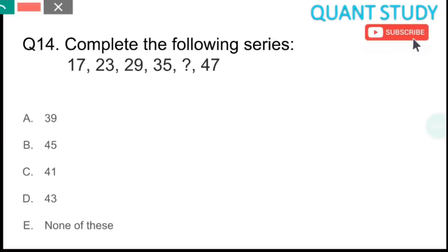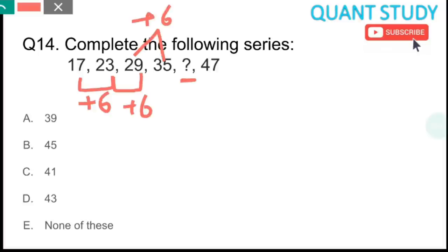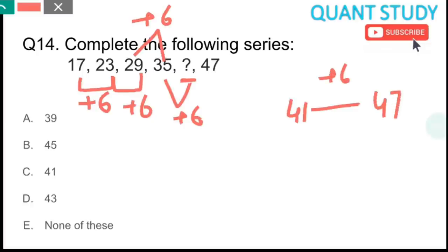Question 14 has a missing element in the middle of a series. One approach is to write the differences between consecutive numbers. The series goes 17, 23, 29, _, 41, 47. The difference between each pair is 6. So: 17+6=23, 23+6=29, 29+6=35, 35+6=41, 41+6=47. The missing number is 35. The answer is option C, 41 — wait, the missing element is 35 between 29 and 41. The answer is option C, 35.